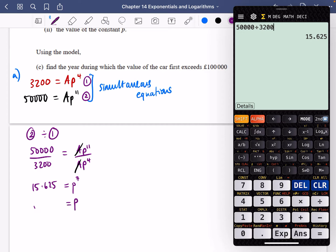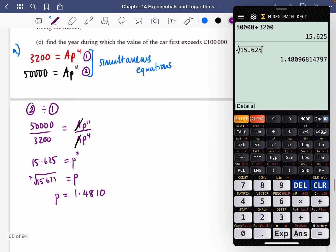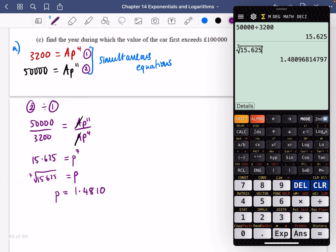To find P, I can do the seventh root of 15.625. You can type that as a root or as a power of 1/7. I'm going to do the seventh root of 15.625, which gives P = 1.4810. Wait, let me recalculate. It should be 50,000 divided by 32,000, which is 1.5625.